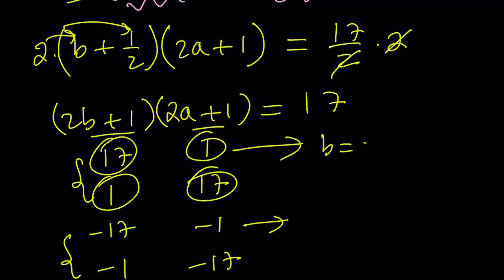From here I get b equals 8. And from the second one I get a equals 0, which means a plus b is equal to 8. That's one of the values.